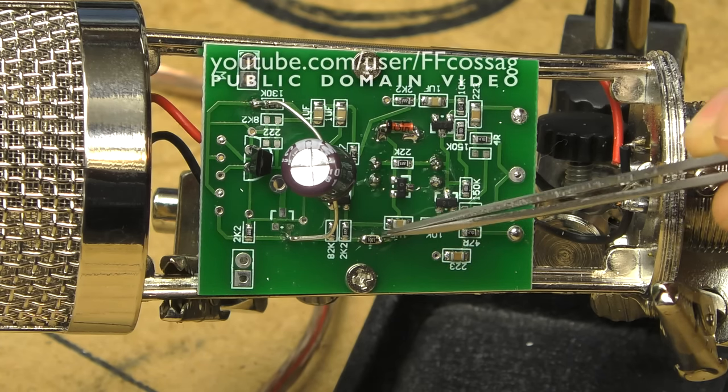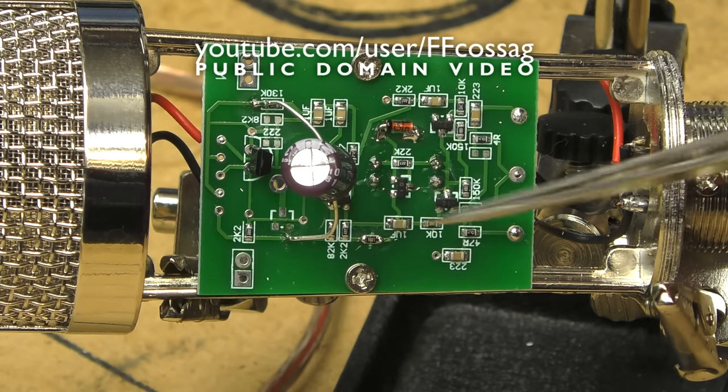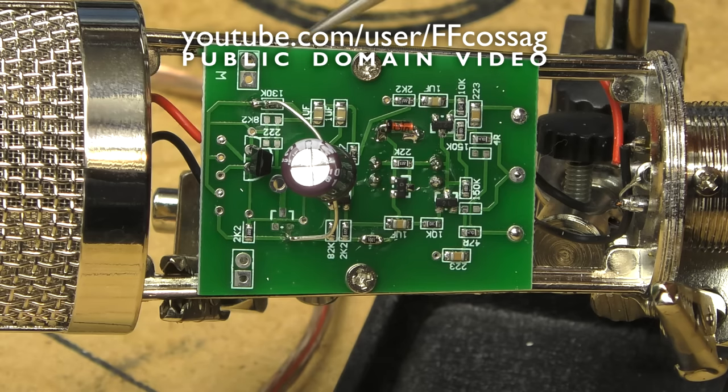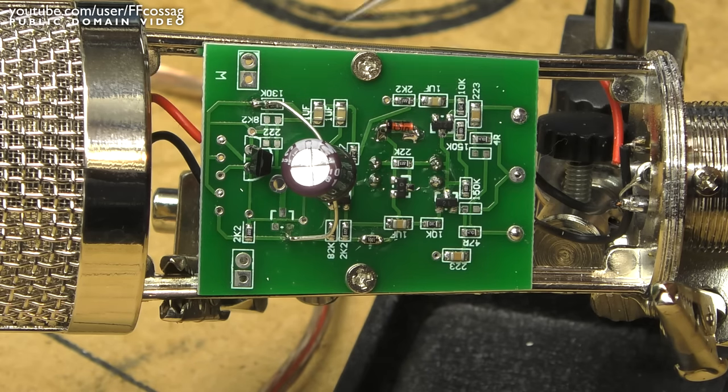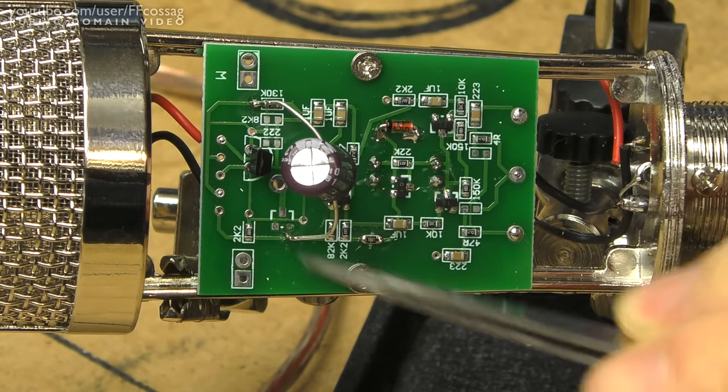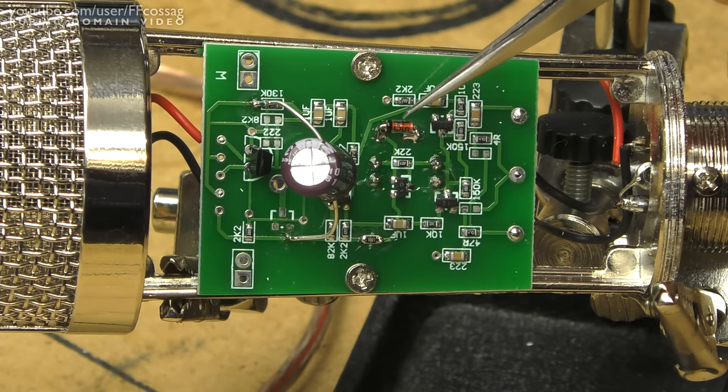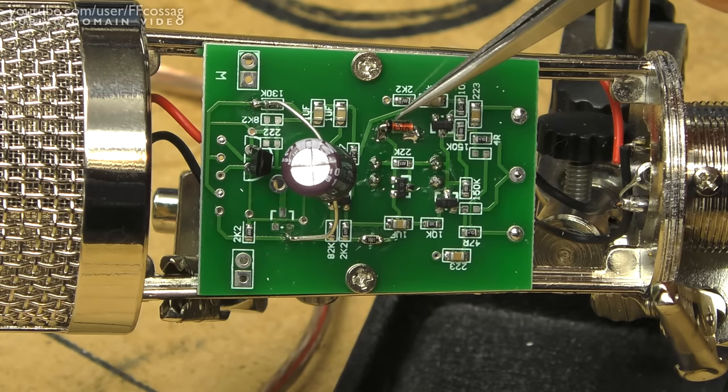You cut this trace and put a 1K resistor in there, you put a 100uF 16V or above capacitor between there and there, anywhere along these tracks will do, and you replace this 9V Zener with an 11V Zener.